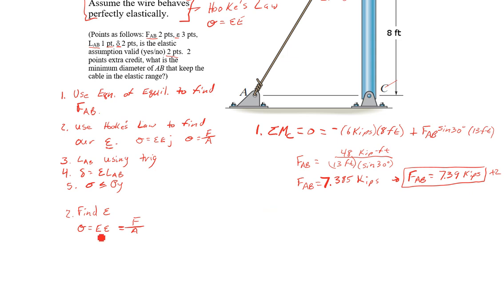We know everything here, we can calculate A. So if I rearrange that, epsilon equals F over A E.